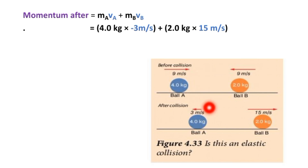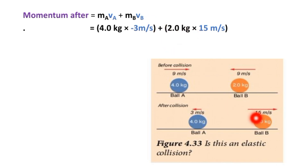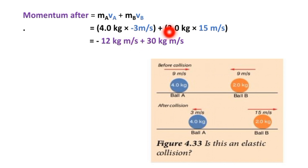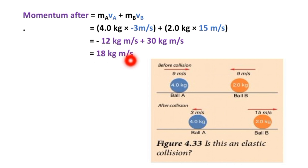Momentum of ball A after = 4 × (minus 3) = minus 12 kilogram meter per second. Plus momentum of ball B after = 2 × 15 = 30 kilogram meter per second. Therefore, total momentum after = 18 kilogram meter per second.